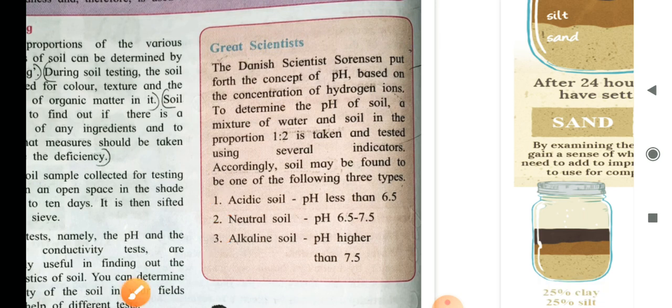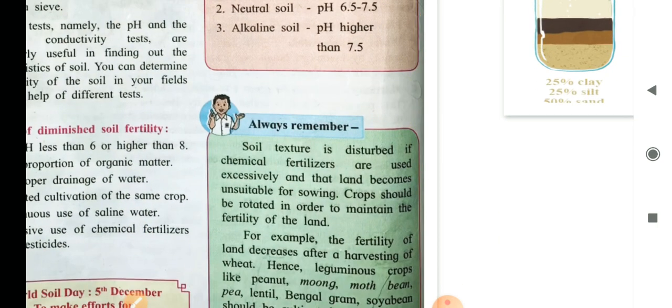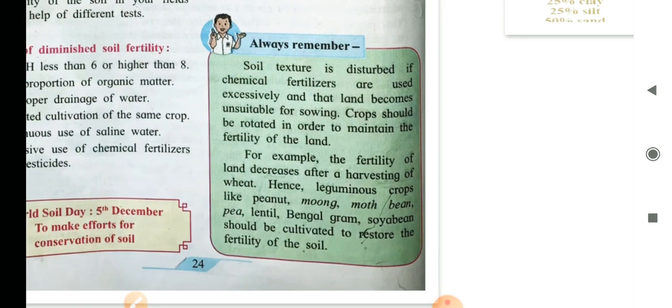Now, this pH is very useful for the farmers. They can decide which crop or type of crop they can cultivate. They take their soil for testing. Now, always remember, soil texture is disturbed if the chemical fertilizers are used excessively and that land becomes unsuitable for sowing. Crops should be rotated in order to maintain the fertility of the soil or land.